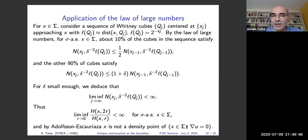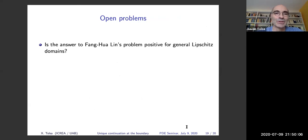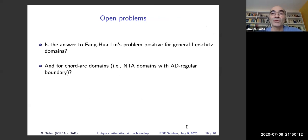Let me mention a few open problems. For general Lipschitz domains without a small-constant assumption, the problem seems really hard. Also open are the cases of more general domains — Chord-arc domains (NTA domains with regular boundary), for example Reifenberg flat-type domains. And the question of what happens with blowups also remains open. That's all — thank you.